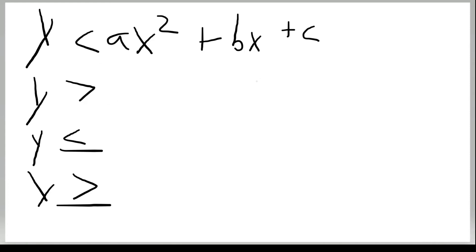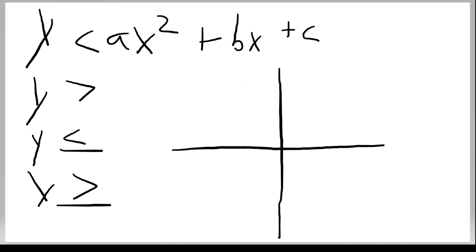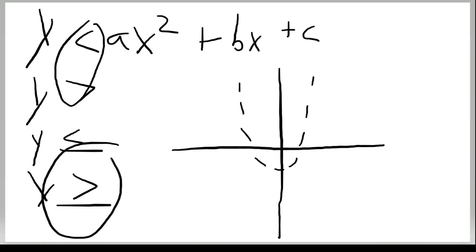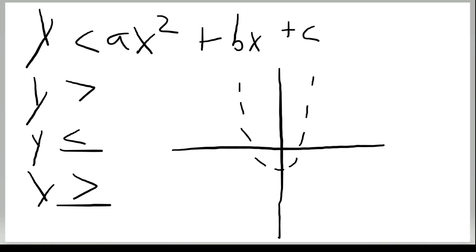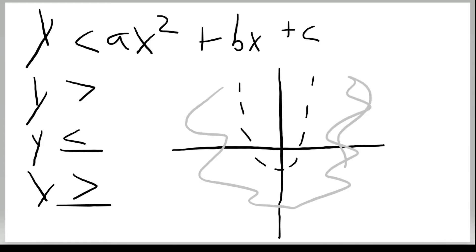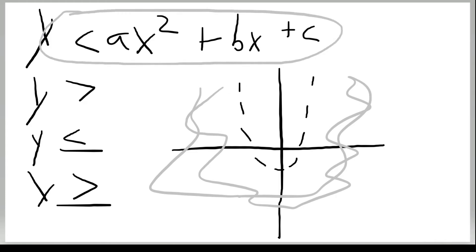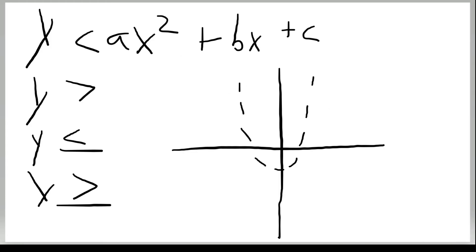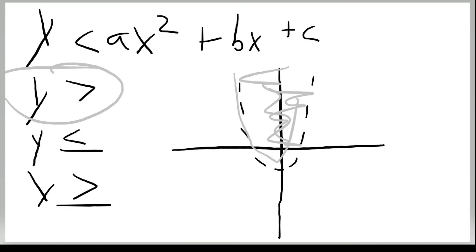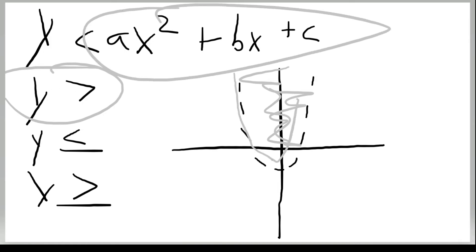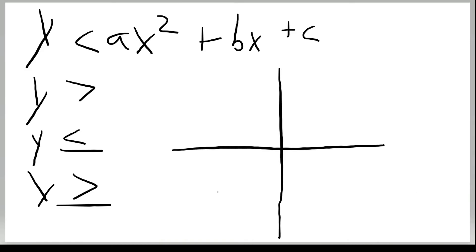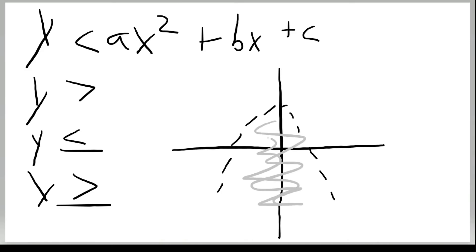If the inequality has no line underneath (strictly less than or greater than), the graph shows a dotted line. For a parabola with shading on the outside, it would be y is less than the equation. If the shading is on the inside, it would be y is greater than the equation, since y is greater than the function value there.